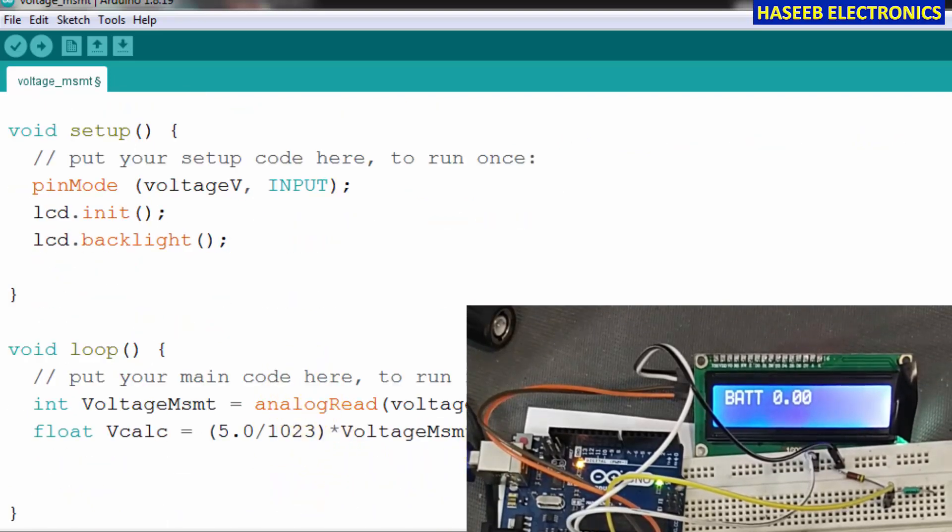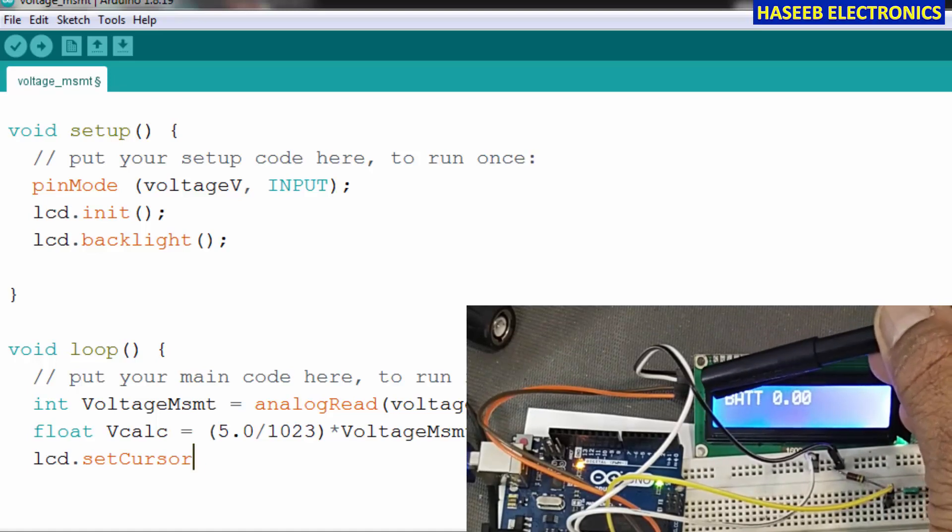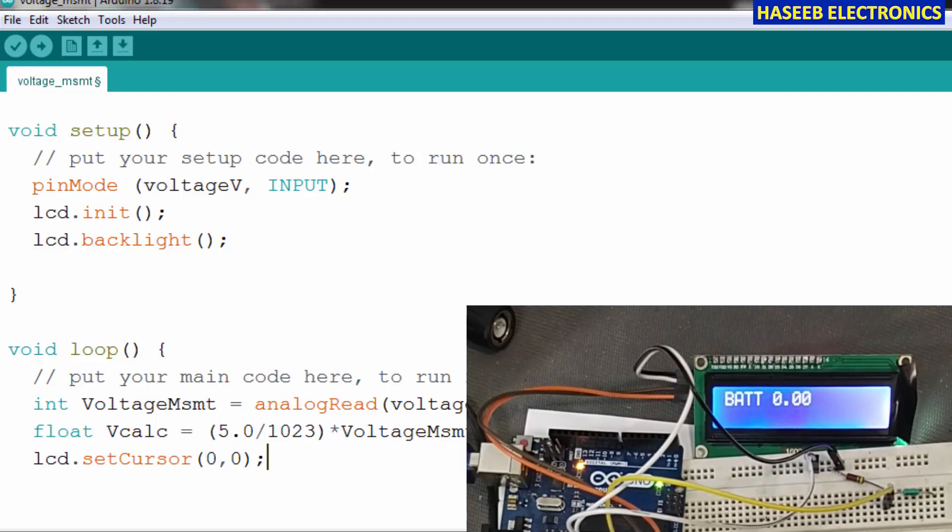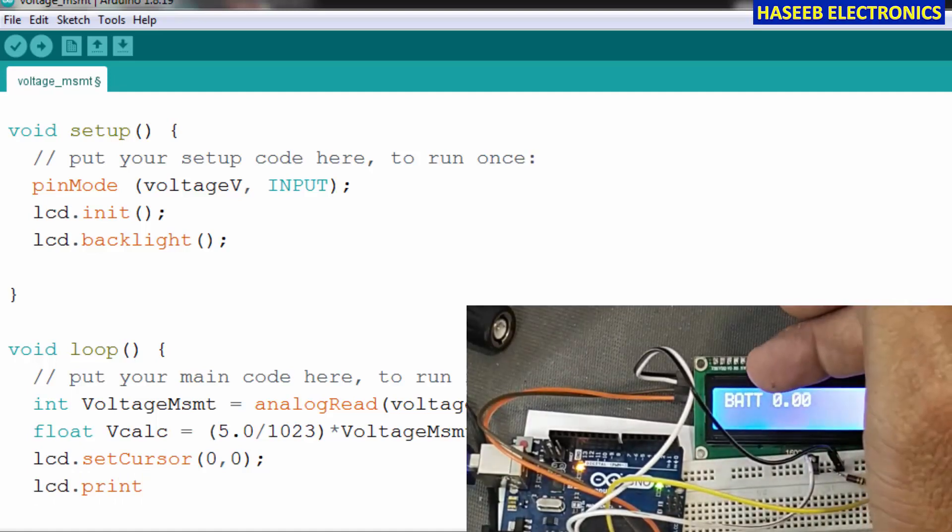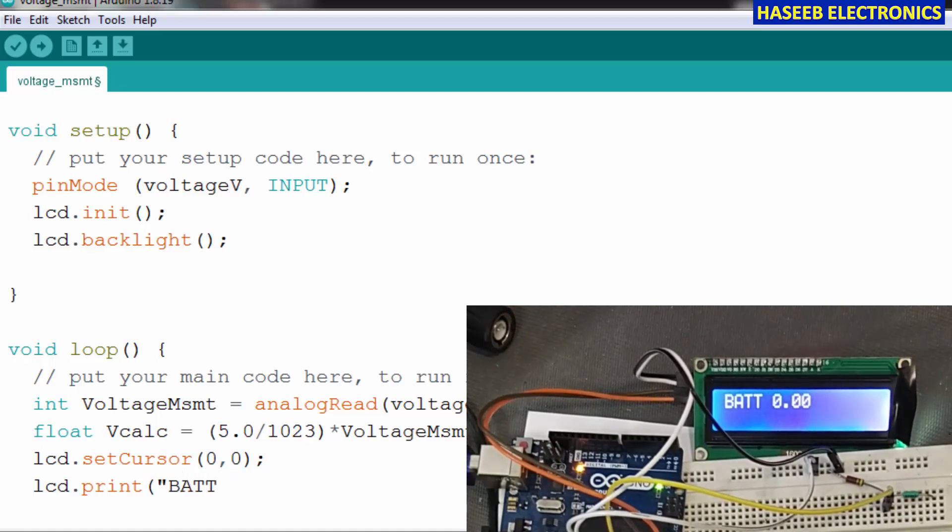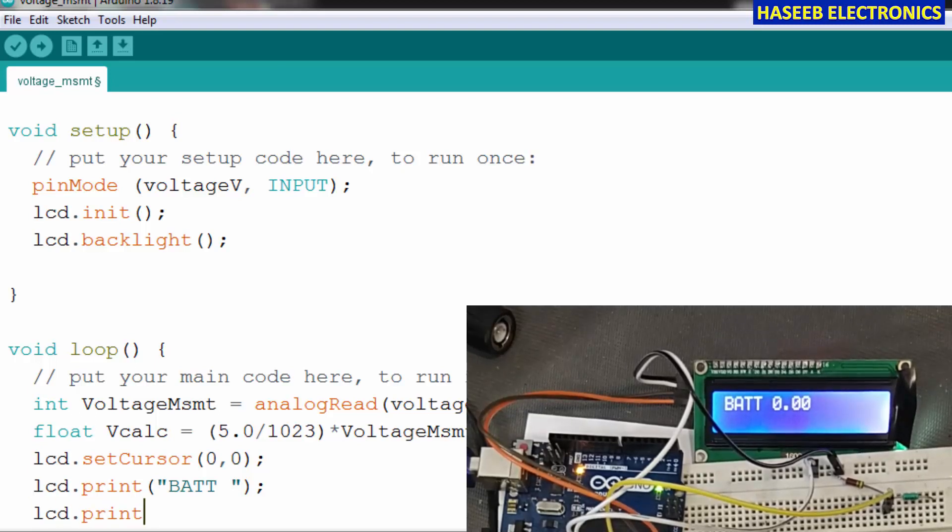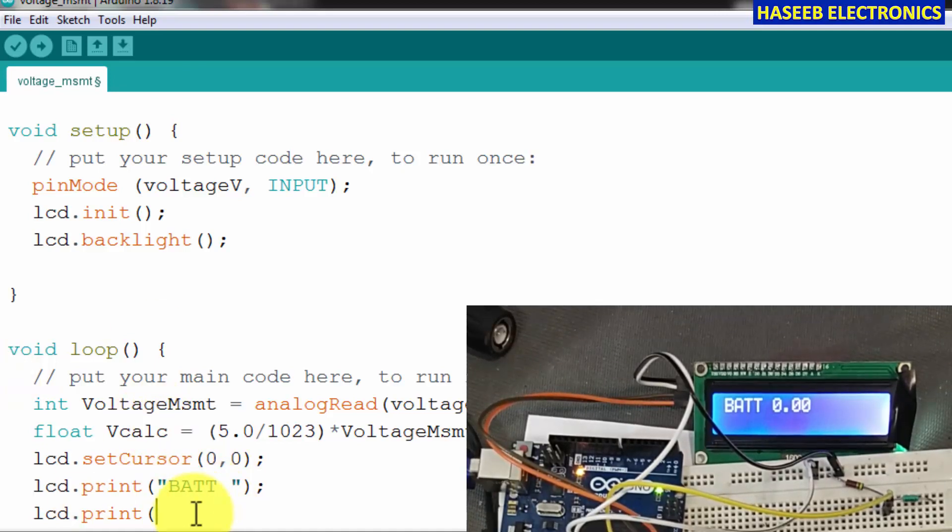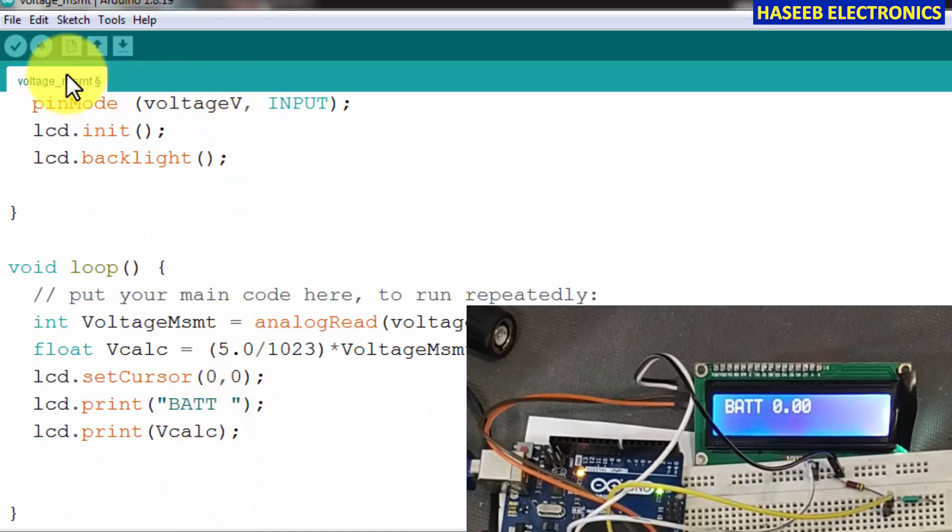Now in the loop mode we will say lcd.setCursor. At which place of this LCD we want to display? We want to display at zero column zero. Set cursor zero comma zero, terminate. Lcd.print. Do we want to display any word before this? Battery voltage. Lcd.print in quotes battery space. Lcd.print, now we want to display this calculated voltage value.